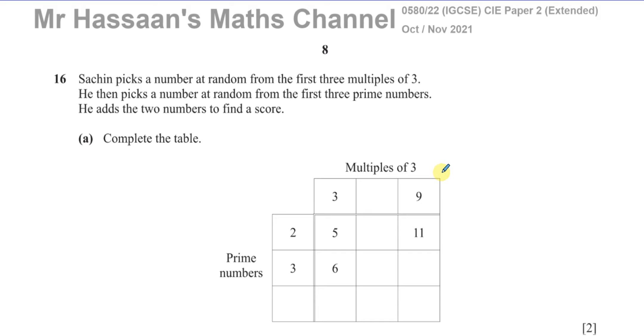This question is about probability. Sashin picks a number at random from the first three multiples of 3. He then picks a number at random from the first three prime numbers. He adds the two numbers to find a score. Complete the table. The first three multiples of 3 are 3, 6, and 9. The first three prime numbers are 2, 3, and 5.